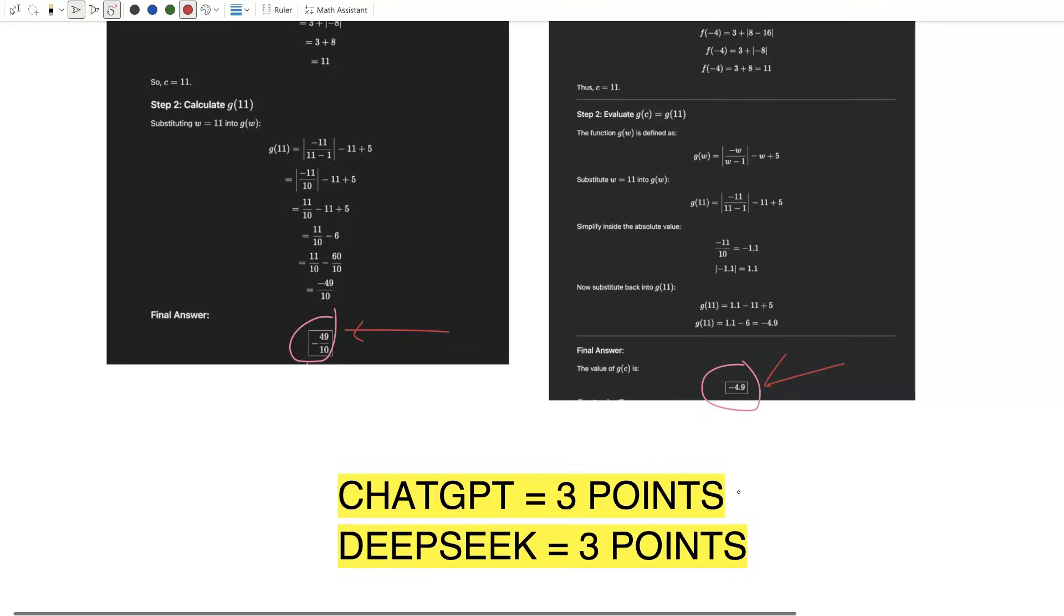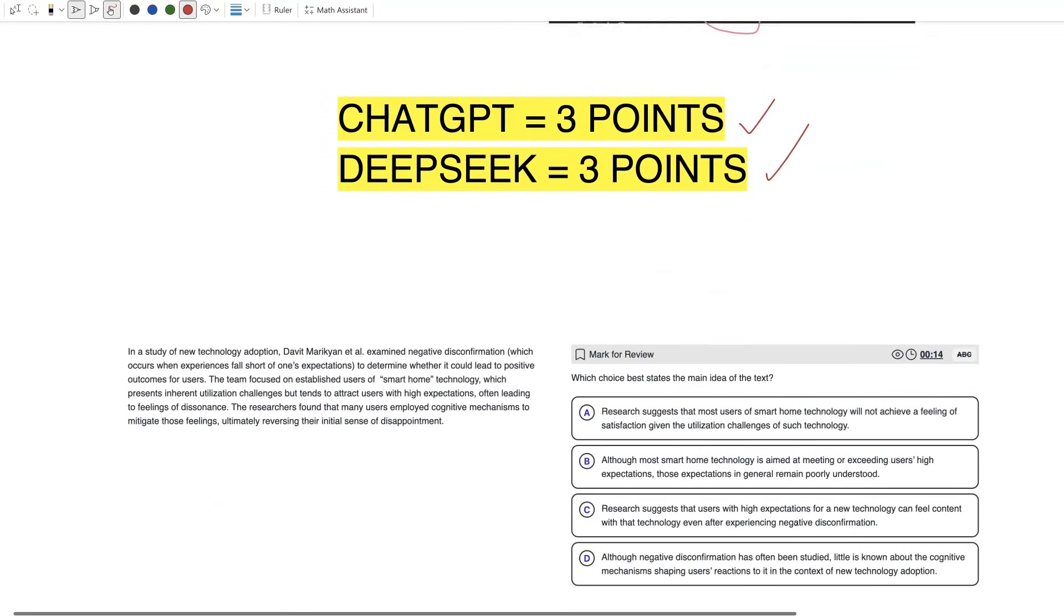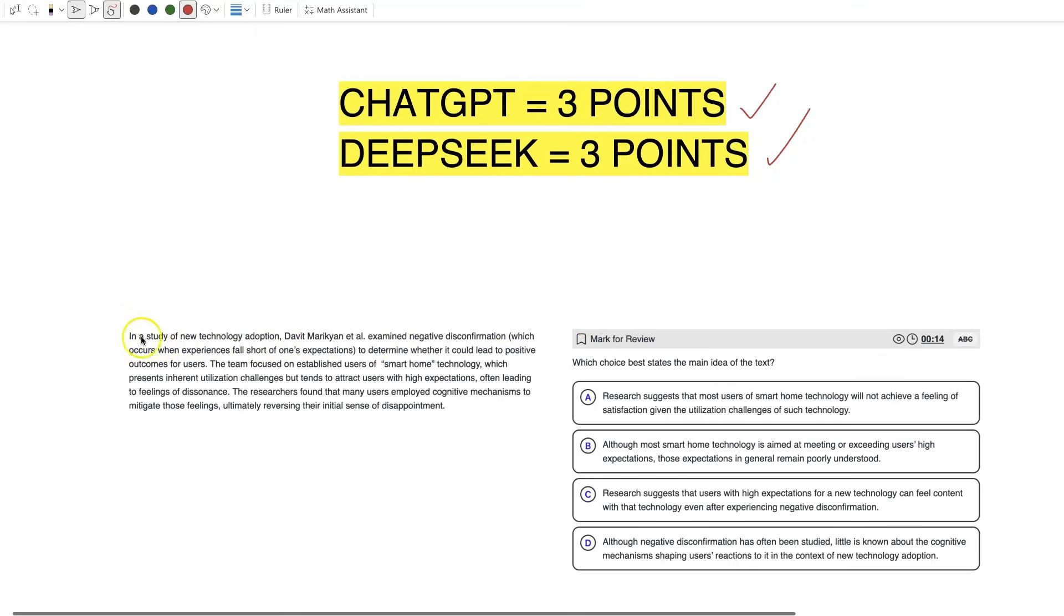I am using the best possible models of both AIs, so it's kind of no surprise that they're getting these questions right pretty easily. Three points apiece. Let's move on to the SAT reading section. We have a main idea question, a nice long passage, four choices. Which choice best states the main idea of the passage?